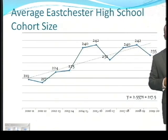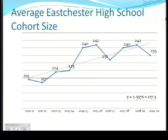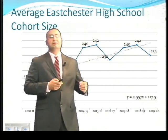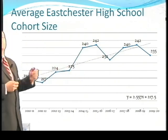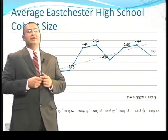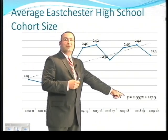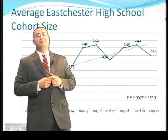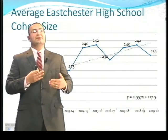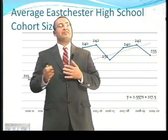The same analysis can be done at the high school level. Looking at average cohort sizes at the high school, in the 2010-2011 school year there are on average 210 students per grade. Moving forward, that trend will take us to about 235 students, and at one point exceeding 240 students on average. The equation modeling the high school pattern is y equals 2.557x plus 217.5, and the same procedure would be applied to get projected enrollments going forward.